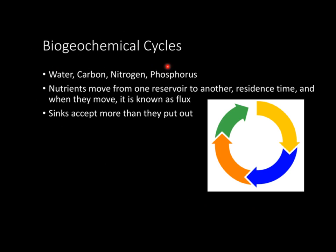Now let's get into biogeochemical cycles. The four main ones we're going to go over are water, carbon, nitrogen, and phosphorus. Basically, how these cycles work is that nutrients move from one reservoir to another. The time spent in each of these reservoirs is known as residence time, and as the different nutrients move from place to place, that in-between time is known as flux — when something's moving from one reservoir to another.